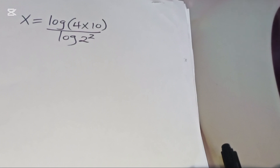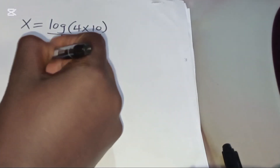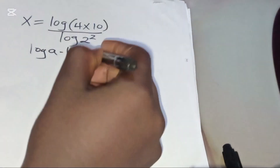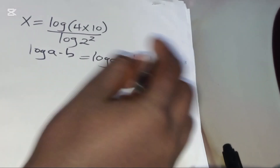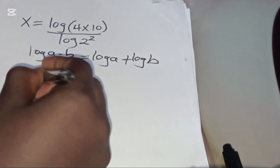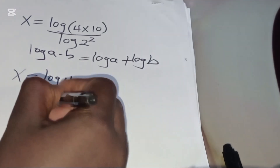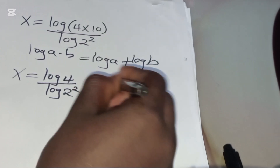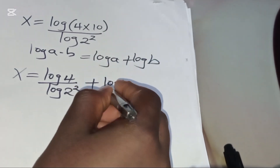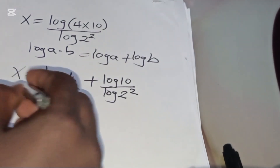So now we have x equal to log(4×10) divided by log(2²). The expression log(4×10) in the numerator is in the form log(a·b), which we can express as log(a) + log(b). Applying this property, x becomes log(4) divided by log(2²), plus log(10) divided by log(2²).